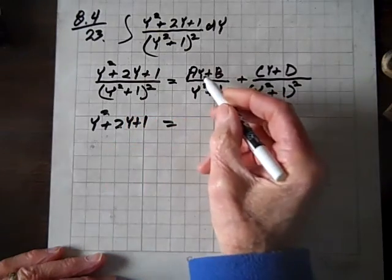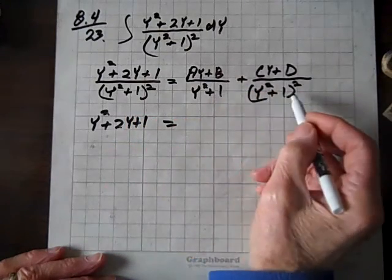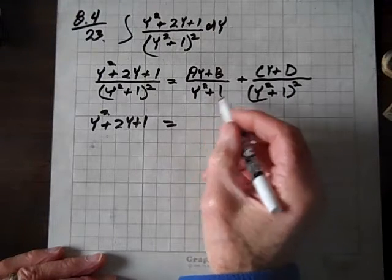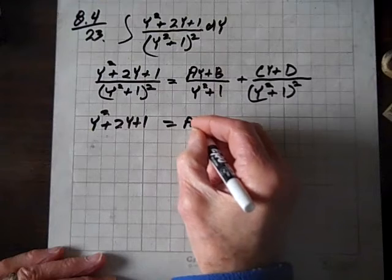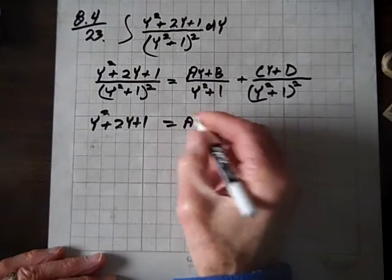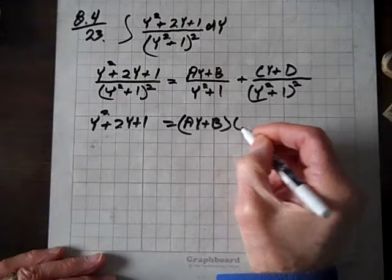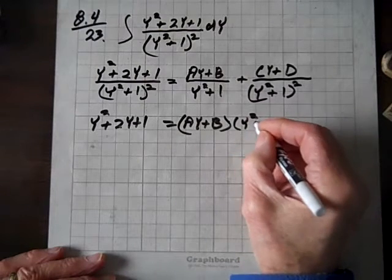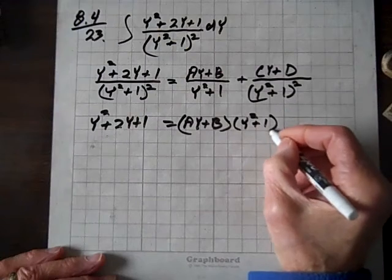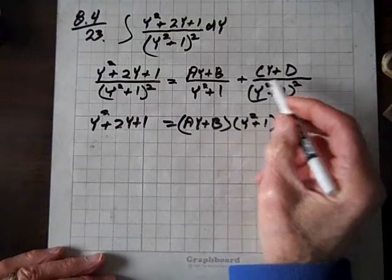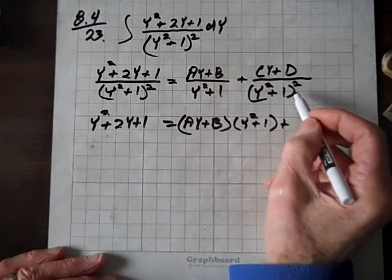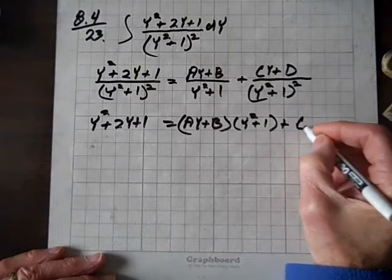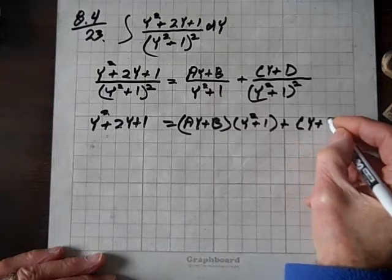On the right, when we multiply this term times this expression squared, we're still going to have a factor of this left. So we'll have ay plus b times y squared plus 1, plus when we multiply this term times the denominator, the denominator divides out, and we just get cy plus d.